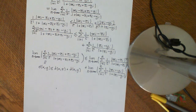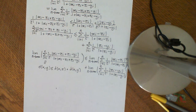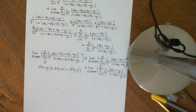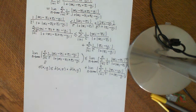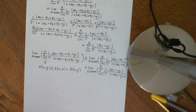Basically, even on a set like that, you can define a metrical structure. This makes what is known as a sequence space — the set of sequences along with this metrical property makes a sequence space, and it is a metric space.